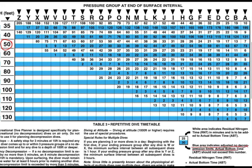Focusing on the note at the bottom of the table: the blue area indicates your actual bottom time — your adjusted no-decompression limit, the amount of bottom time you cannot exceed. If we want to spend 50 minutes at 50 feet, we need to scroll along that 50-foot row until we find a number that is 50 minutes or greater.